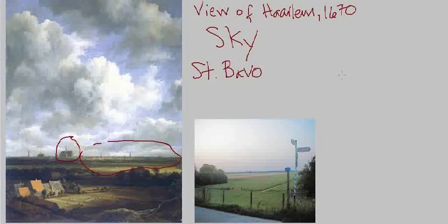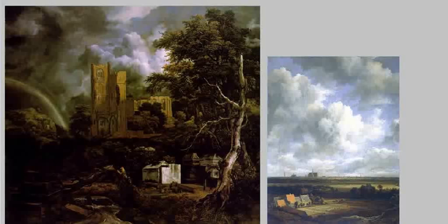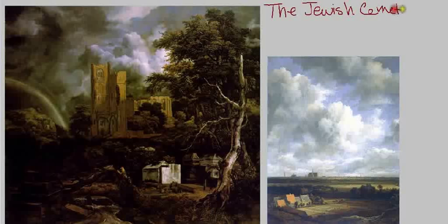Jakob van Ruisdael also painted very different kinds of landscapes that you could almost call fantastical. The image on the left is known as the Jewish Cemetery, and it dates to around 1655, also by Jakob van Ruisdael. I included a smaller image of the View of Haarlem we just looked at for the sake of comparison, so you can keep in mind the other kinds of paintings this artist created.